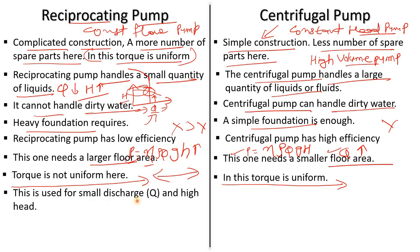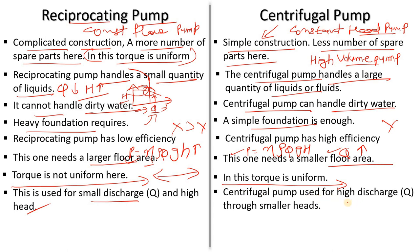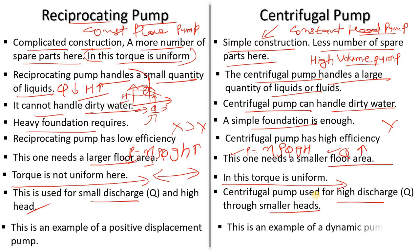The reciprocating pump is used where small Q and high head are required, and is an example of a positive displacement pump. The centrifugal pump is used where high discharge and smaller head are required, and is a rotodynamic pump.